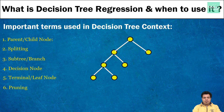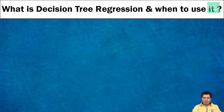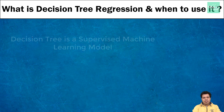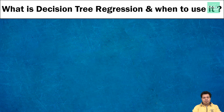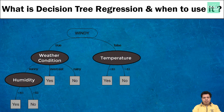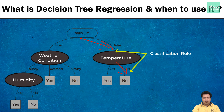So what is a decision tree? A decision tree is a supervised machine learning model which is used to predict a target variable by learning decision rules from associated features. Using decision trees, we can make decisions by using a flowchart-like tree structure. In a decision tree, we generally break down our data by making a decision based on a series of yes or no questions. This path from root to leaf is called a classification rule.